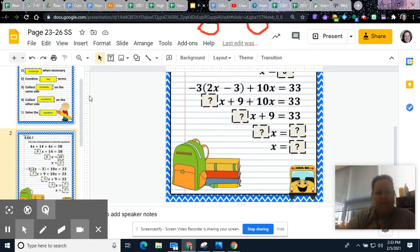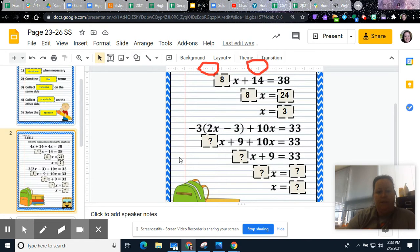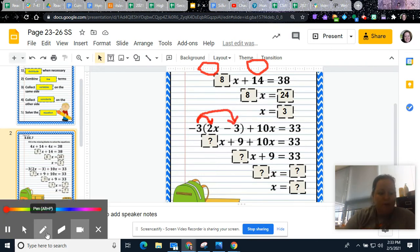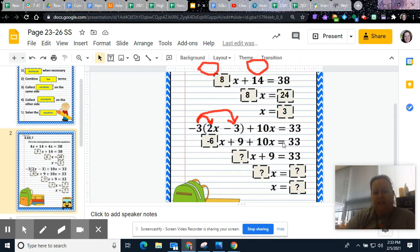We have first distribute when necessary. So we do have parentheses on this one. So how you distribute is you're going to take the number that's on the outside of the parentheses and you're going to multiply it by everything that's on the inside. So you have negative 3, oops, negative 3 times negative 2 is negative 6. And then you still have your x, so it's negative 6x. And then negative 3 times negative 3 makes it a positive 9. And then you have plus 10x equals 33.